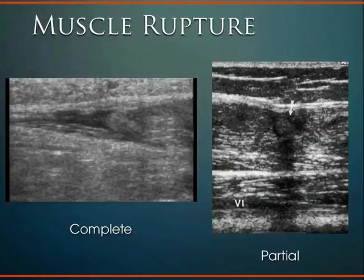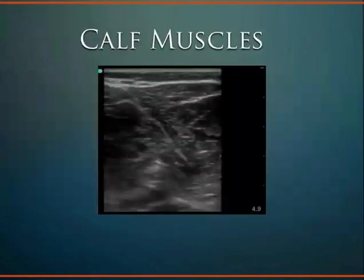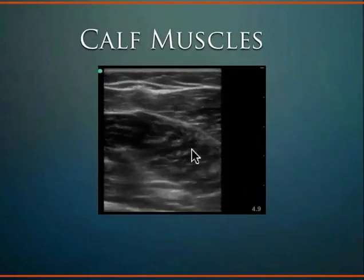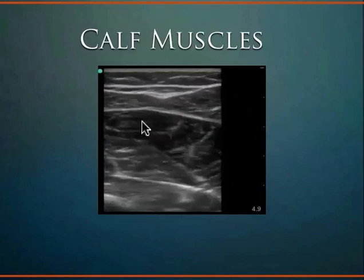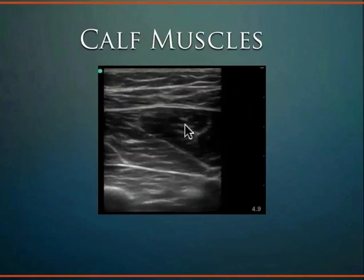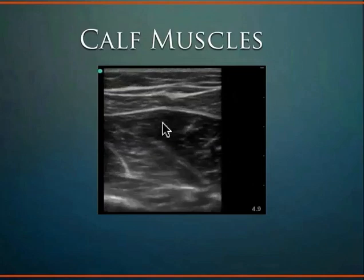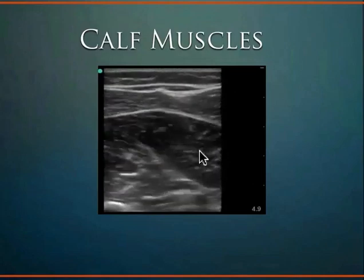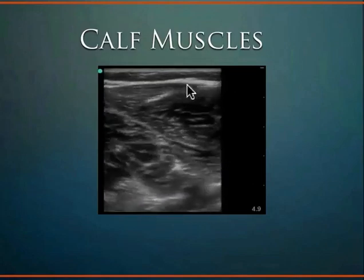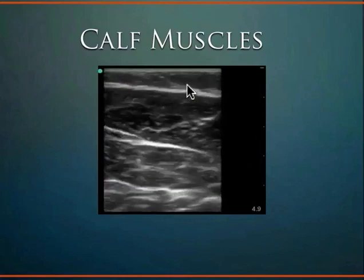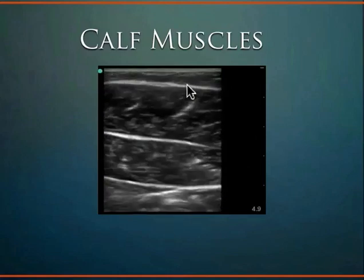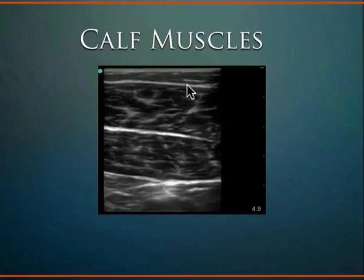A nice view of a calf muscle shows connective tissue planes, the deeper fibrillar pattern of the muscle, more connective tissue planes, and then a real-time dynamic view moving across the distribution of the muscle.